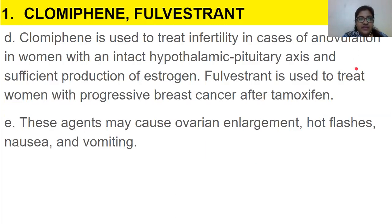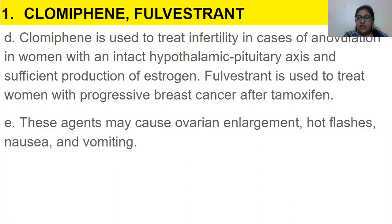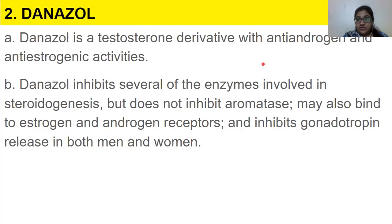Clomiphene has partial agonist activity in some tissues including the ovary and endometrium. Fulvestrant appears to be an antagonist in all tissues. Clomiphene is used to treat infertility in cases of anovulation - absence of ovulation - in women with an intact hypothalamic-pituitary axis and sufficient estrogen production. Fulvestrant is used to treat women with progressive breast cancer after tamoxifen. These agents may cause ovarian enlargement and hot flashes.